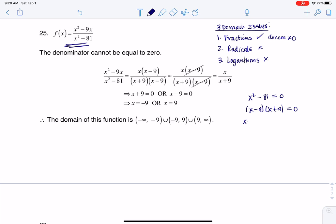And then through the zero product property, either x minus 9 is equal to zero or x plus 9 is equal to zero. So that leaves me with 9 and negative 9.